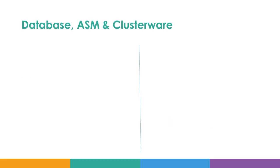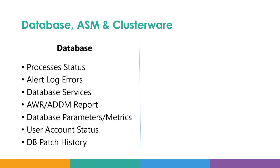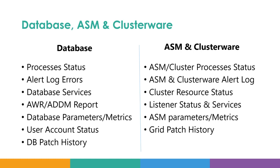First we will check database and ASM level health checks. Whenever you have any issues in the database, you can check for particular processes like PMON or SMON, and you can also check the alert logs for corresponding errors. You can check database services either through srvctl or crsctl to get a view of the services that are running. Very important are the AWR and ADDM reports, because sometimes there could be performance or connectivity issues reported in those metrics, like slow response from the disk. You can also check the database parameters corresponding to Exadata, like cell offloading and Smart Scan.